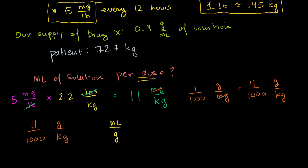So in our solution, how many grams are there per milliliter? Well, they told us there's 0.9 grams per milliliter. Or for every 1 milliliter, there are 0.9 grams. Notice, I just took the inverse of that, because we want a milliliter in the numerator, grams in the denominator, so that these two cancel out. And let's do this multiplication now.